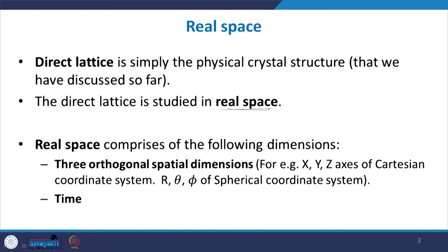What is meant by a real space? First of all, our direct lattice - what is a direct lattice? It is the physical crystal lattice structure that we have been discussing so far. Whatever we can see in the real space, that crystal structure or crystal lattice is the direct lattice, and it is studied in the real space.